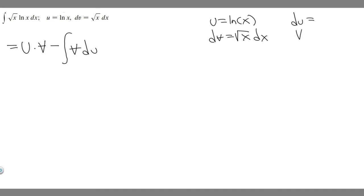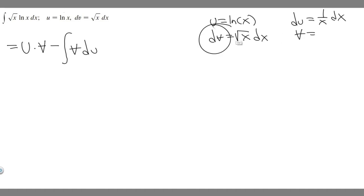Du is just the derivative of u. Since u is ln of x, the derivative of the natural log of x is 1 over x dx. Then, to find v, we know dv equals the square root of x dx, so we need to take the integral of this. The way I like to think through it: this is x to the 1/2.